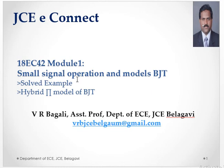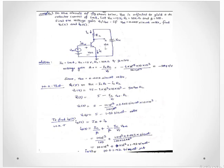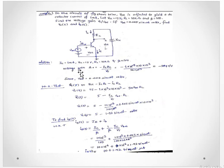Hello students, welcome to JCE Connect. In this video we are going to discuss the hybrid pi model of BJT. We'll see one example: in the circuit figure shown below, VB is adjusted to yield a DC collector current of 1 milliampere. Let VCC = 15 volt, RL = 10 kilo ohm, and beta = 100. Find the voltage gain VC/VB.